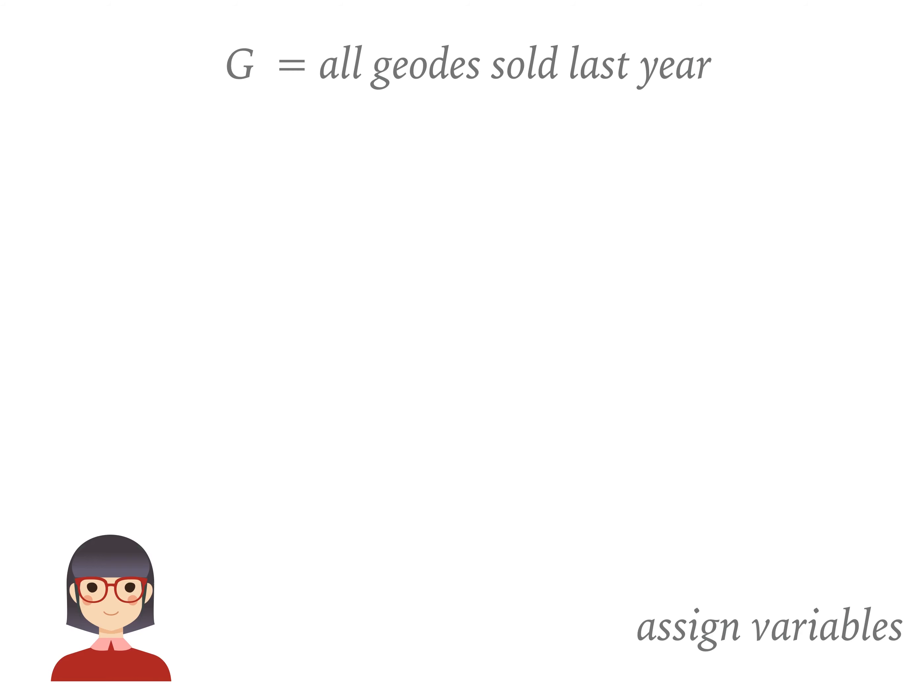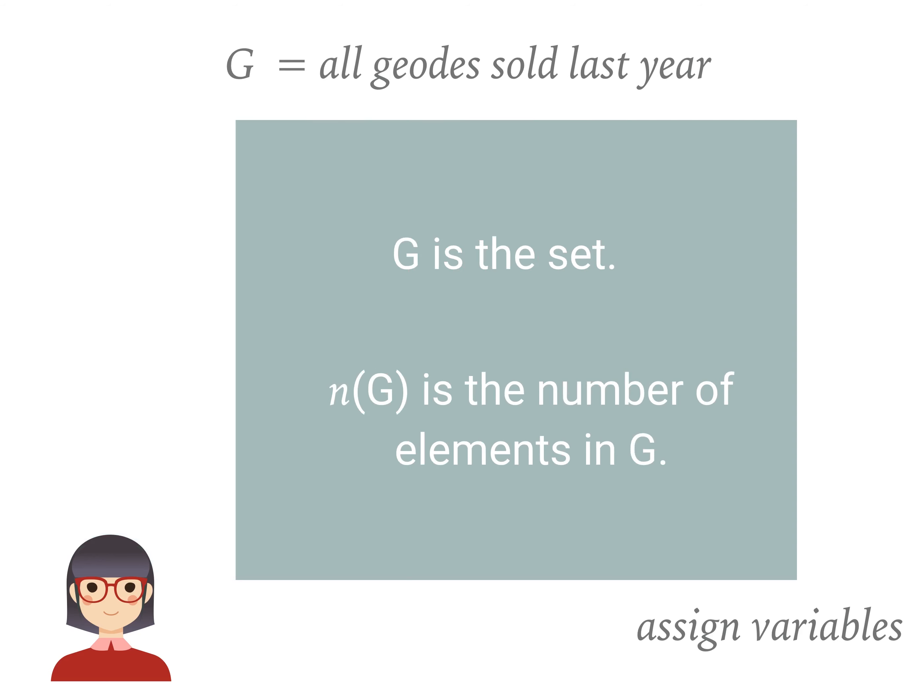G is the set of all geodes sold last year. Now I'll unpack that notation from earlier. G is the label for the actual set of geodes itself, not the number of elements in the set. If we want to represent the number of elements in the set, we use n(G).